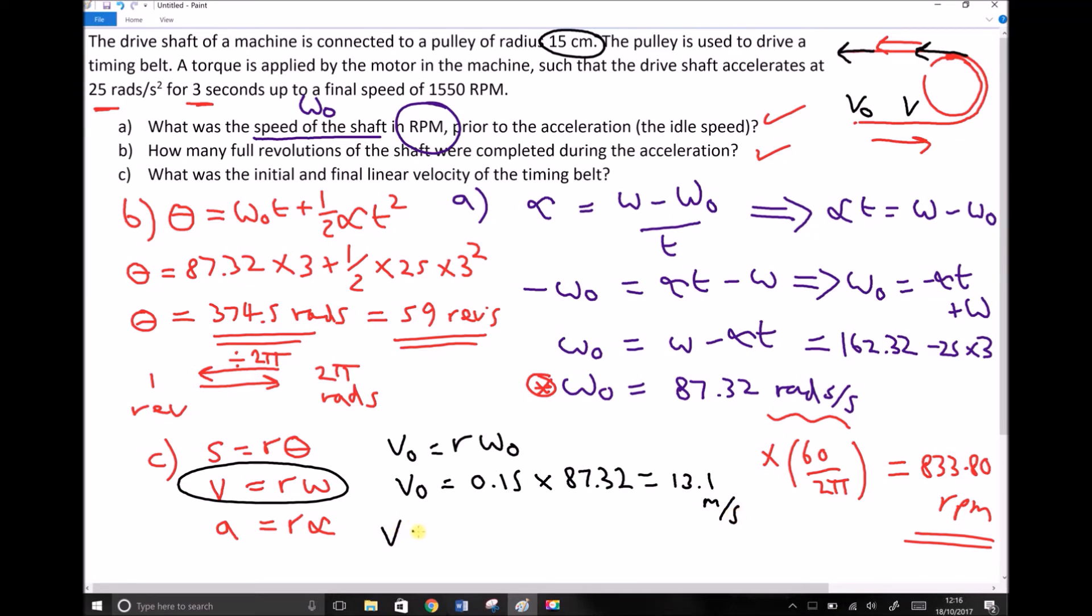We can repeat the same for v because v is just r omega, which is 0.15 times 162.32. And multiplying that out this time gives us a final linear velocity of 24.3 meters per second.